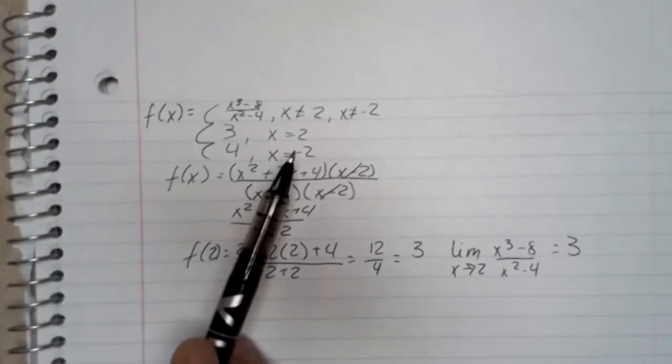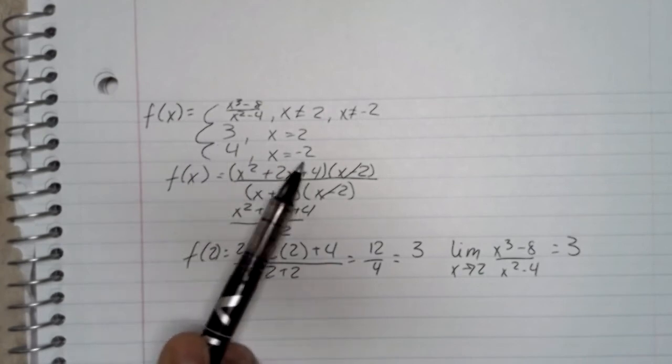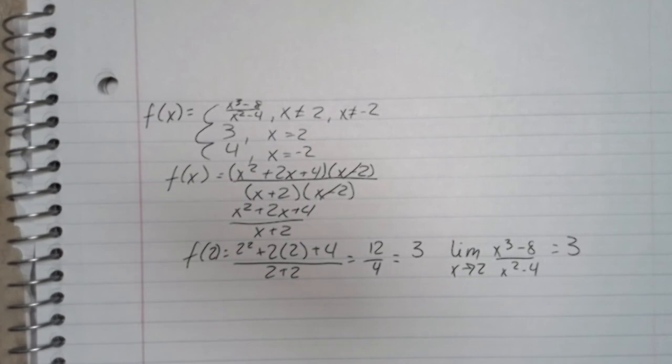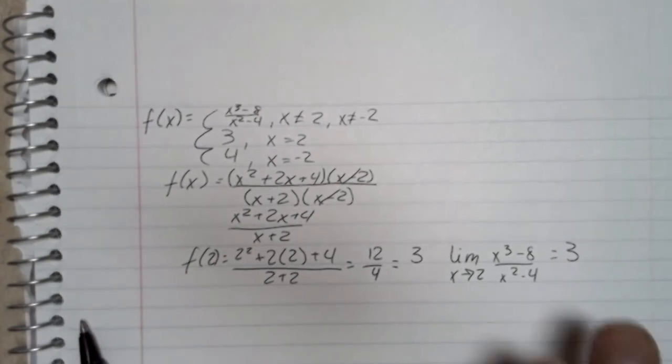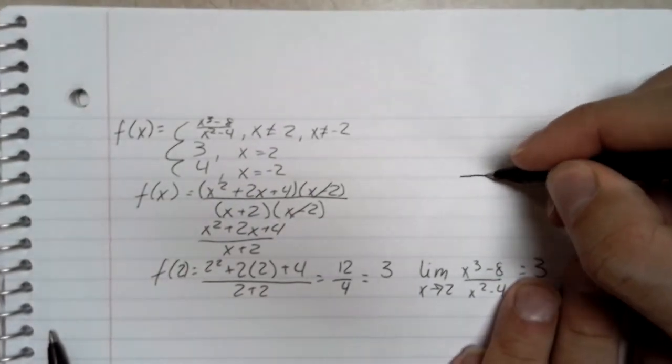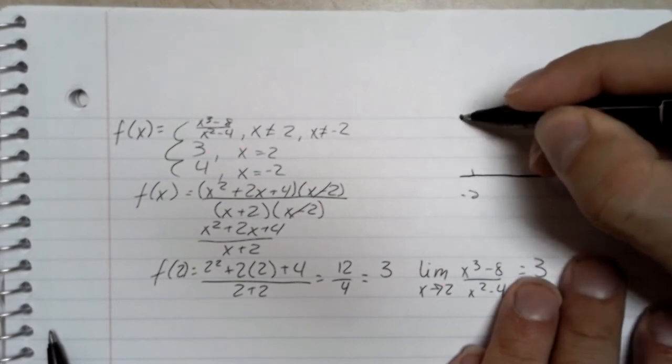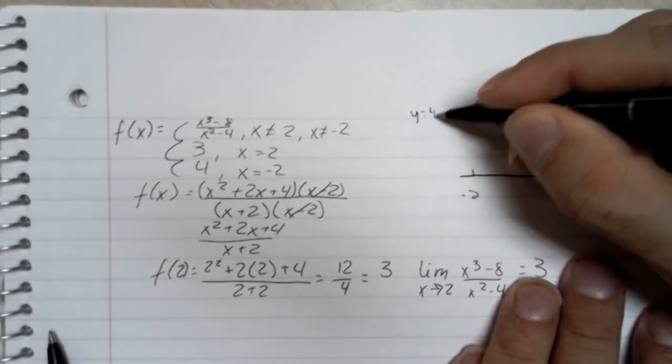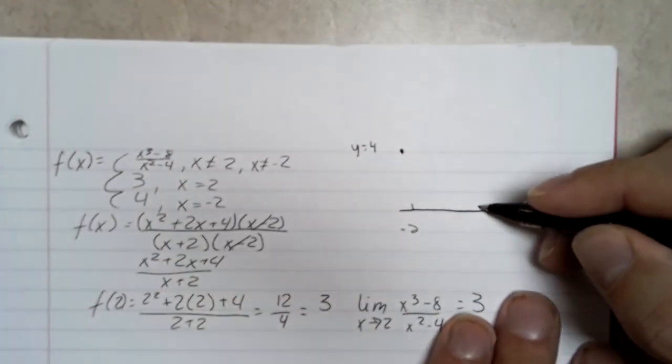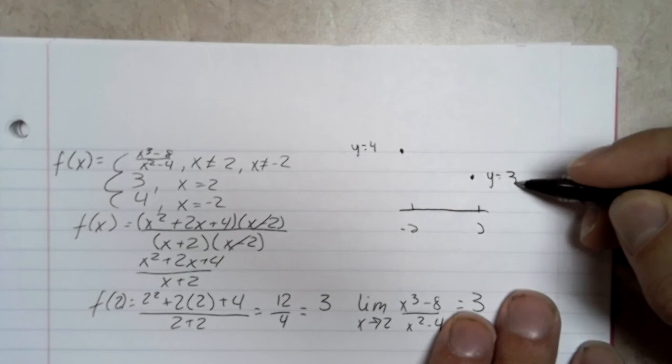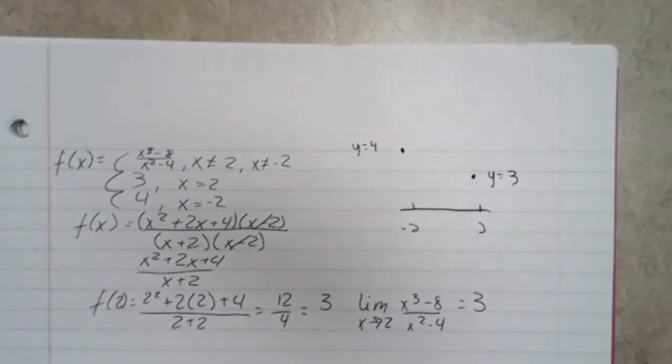So then if you plug these in, 2 cannot equal 3 and negative 2 cannot equal 4, so I put that the limit doesn't equal the function value. You might be misreading this piecewise defined function slightly. So what this notation is telling you is that at negative 2 this function is 4, and that at positive 2 this function is 3.